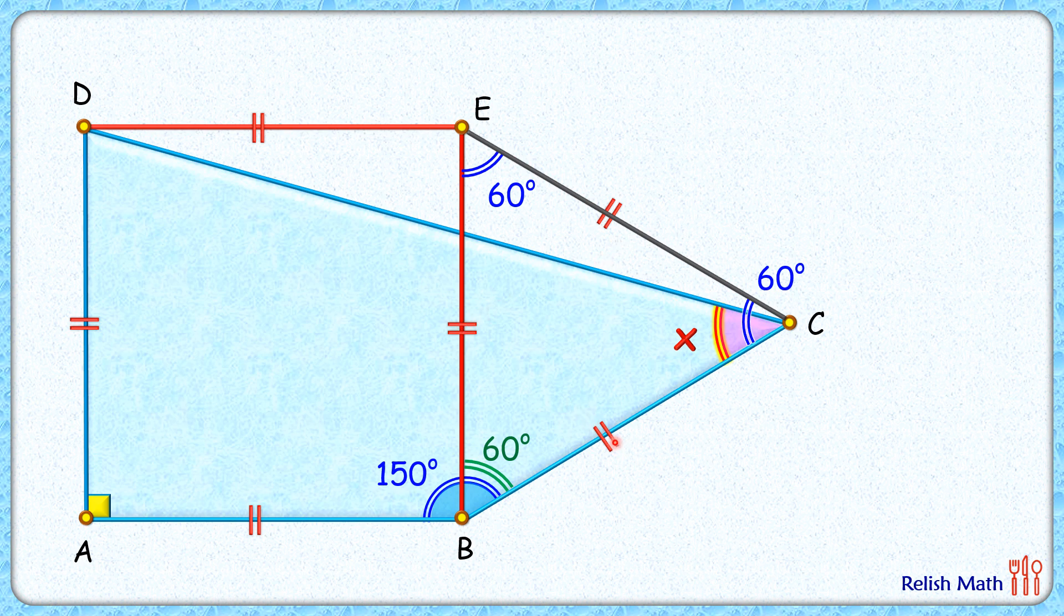Now if we check this yellow triangle here, in this yellow triangle, this angle here is 90 degrees and it's an isosceles triangle. And thus opposite angles will also be equal to each other. So this angle here is equal to this angle.